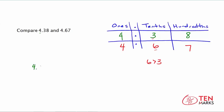The first number, 4.38, has 3 tenths, and the second number, 4.67, has 6 tenths. The digit 6 is greater than 3, which means 6 tenths is greater than 3 tenths. Because we've already found a difference in the numbers, we can stop here and make our comparison: 4.38 is less than 4.67. If the tenths place had digits that were also the same, you would go to the hundredths place and then make your comparison from there.